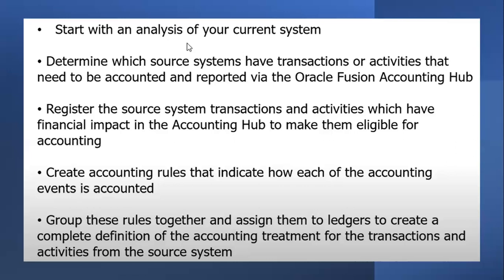The fourth activity is to create accounting rules that define how each accounting event is accounted. Based on the source data provided by the source system, we identify the events that need to be accounted. The fifth step is to group these rules together and assign them to the ledger, to create a complete definition of the accounting treatment for the transactions and activity from the source system. At the end, we club all the rules together and assign them to the respective ledger for which we want to generate the accounting. These are all the mandatory steps needed before integrating with Oracle Cloud.